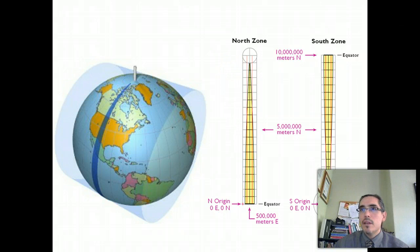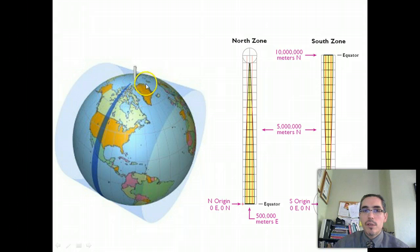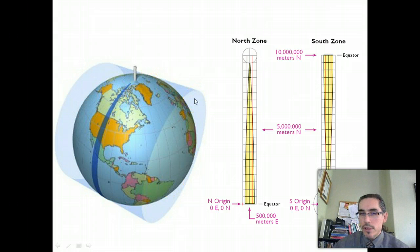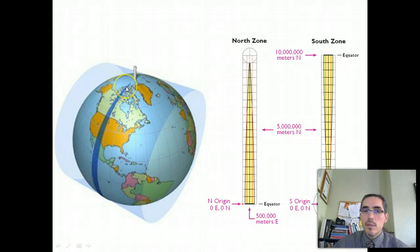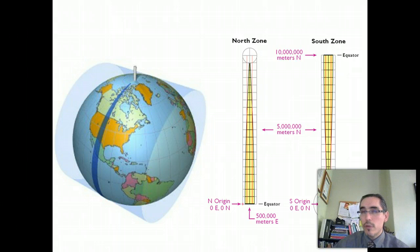Each UTM zone is constructed from a secant transverse mercator projection. This cylindrical projection is transversely oriented so that it is tangent along a line of longitude. This long, skinny zone is constructed in such a way that the line of tangency runs right down the middle of it. So each zone has a central meridian, which minimizes the distortion within that particular zone.